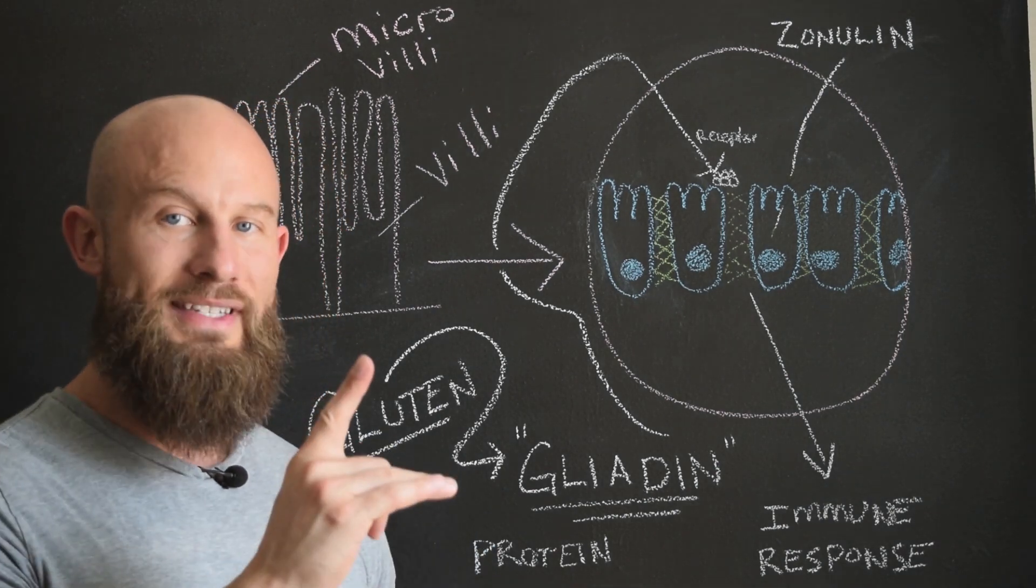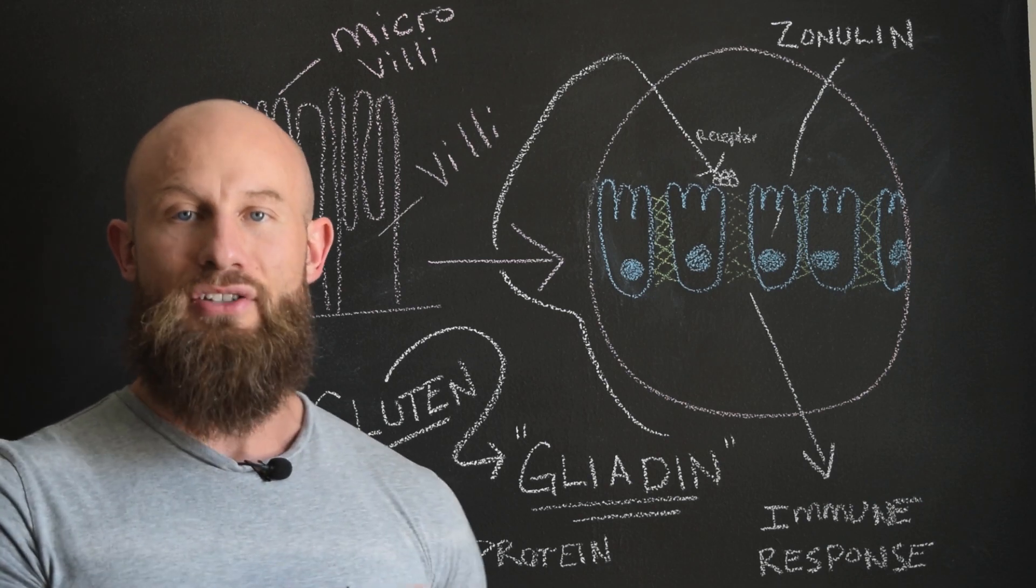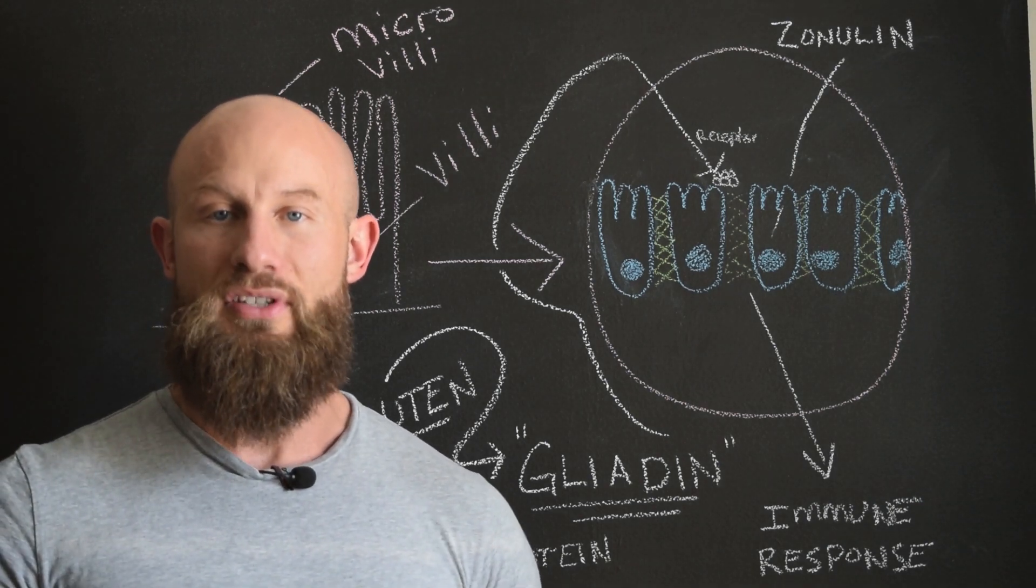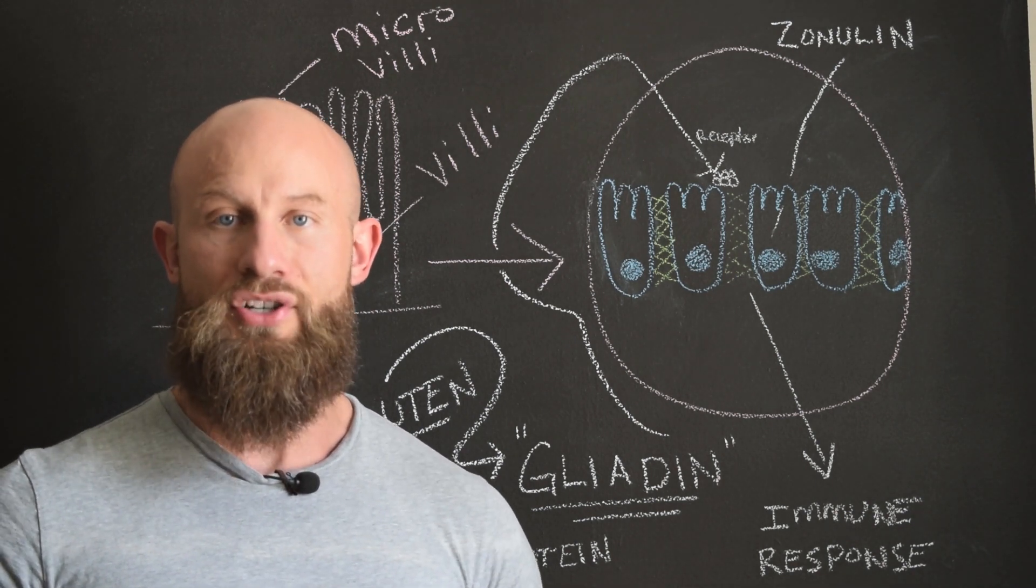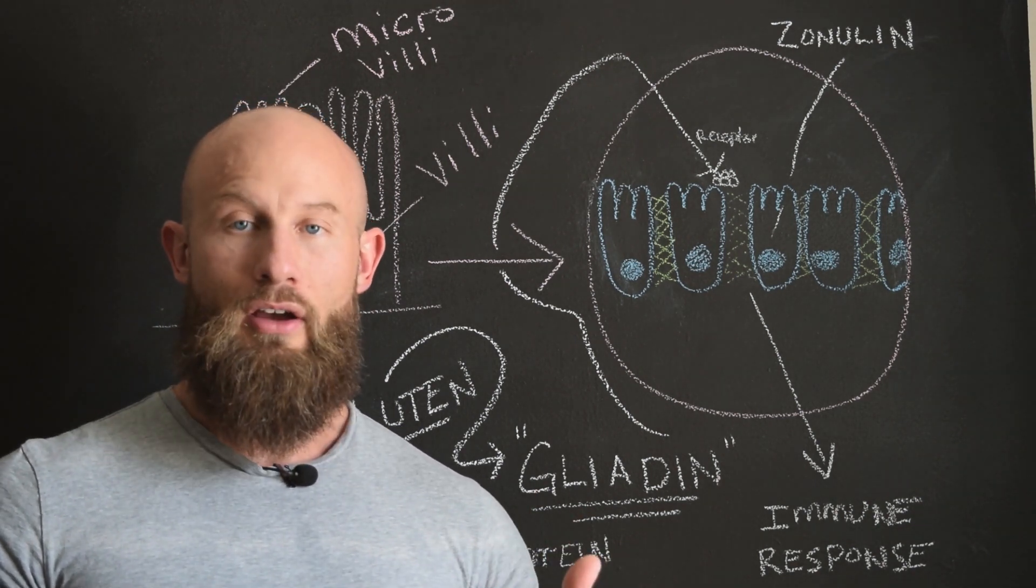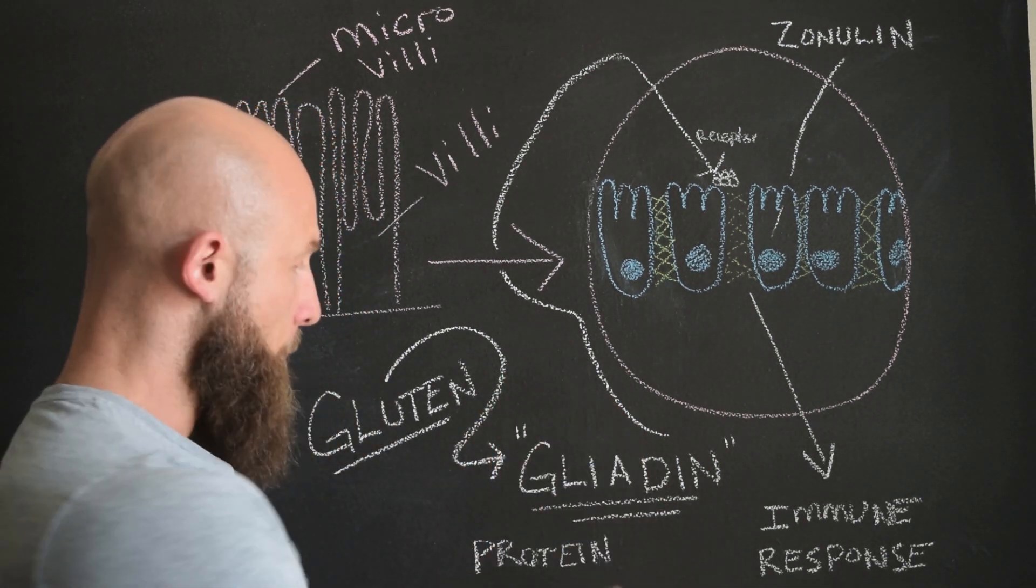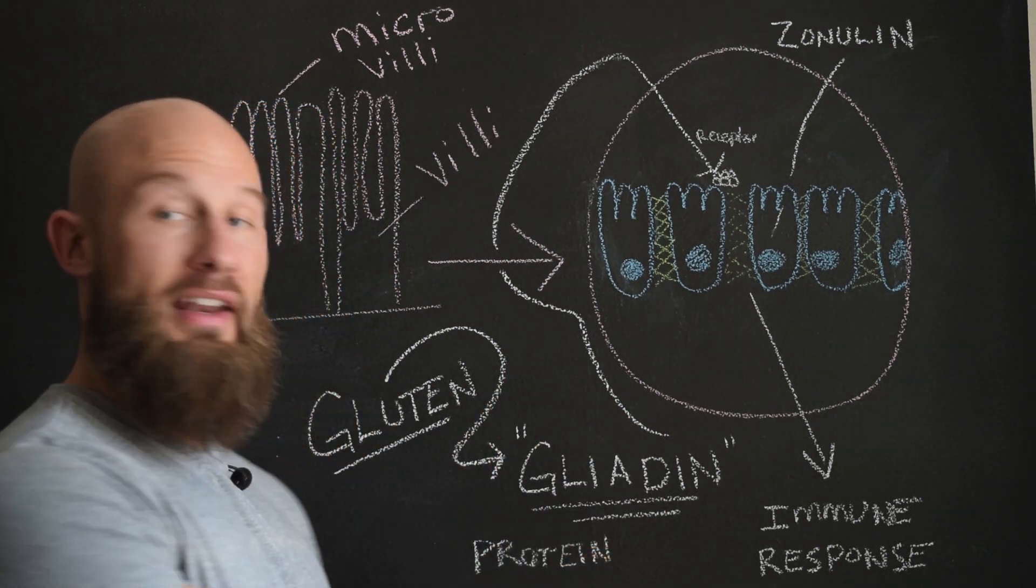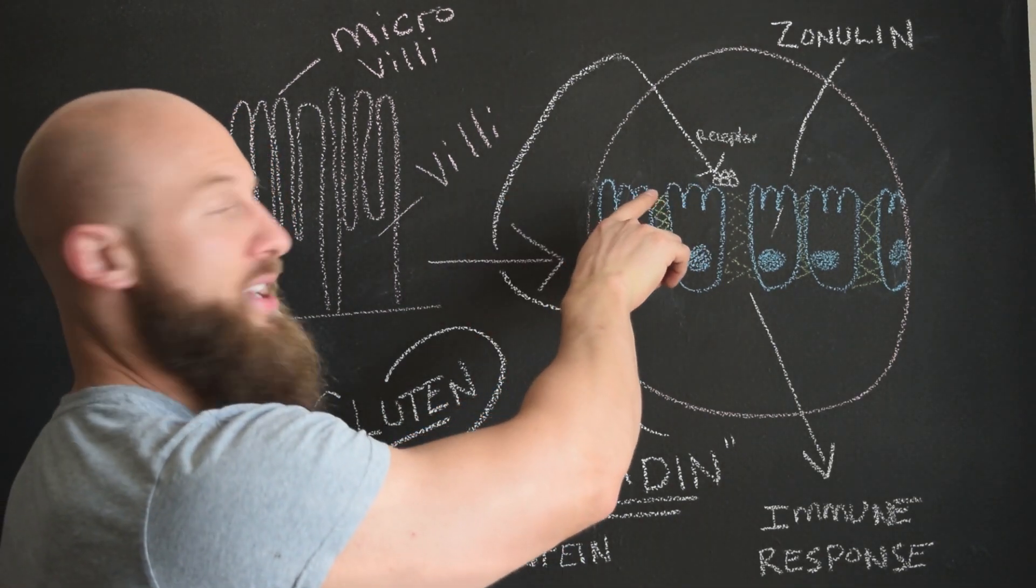What happens is when you consume gluten, there's a protein in it called gliadin. And that is actually what humans are not able to break down and digest and utilize. It's proven. There's a lot of clinical research. Dr. Tom O'Brien speaks about it. So when you consume gluten, it has a protein called gliadin, and it's undigested. We can't digest this protein, and so it enters the intestine, enters the GI.